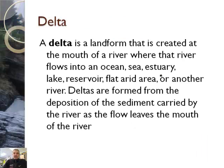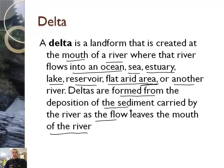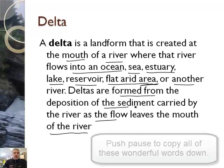That leads us to what's called a delta. A delta is a landform created at the mouth of a river, where that river flows into an ocean, a sea, an estuary, a lake, a reservoir, a flat arid area like a desert, or another river. Deltas are formed from the deposition of the sediment carried by the river as the flow leaves the mouth of the river.